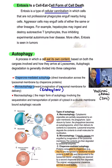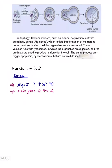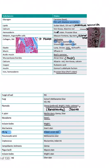In chaperone-mediated autophagy, the important molecules are HSC-70 and LAMP-2A. The scientist credited with autophagy is Sir Yoshinori Ohsumi, who received the Nobel Prize in 2016 — may be asked as an image-based MCQ. Autophagy markers: LC3, genes ATG5 increase the risk of TB, but the main gene is ATG1.